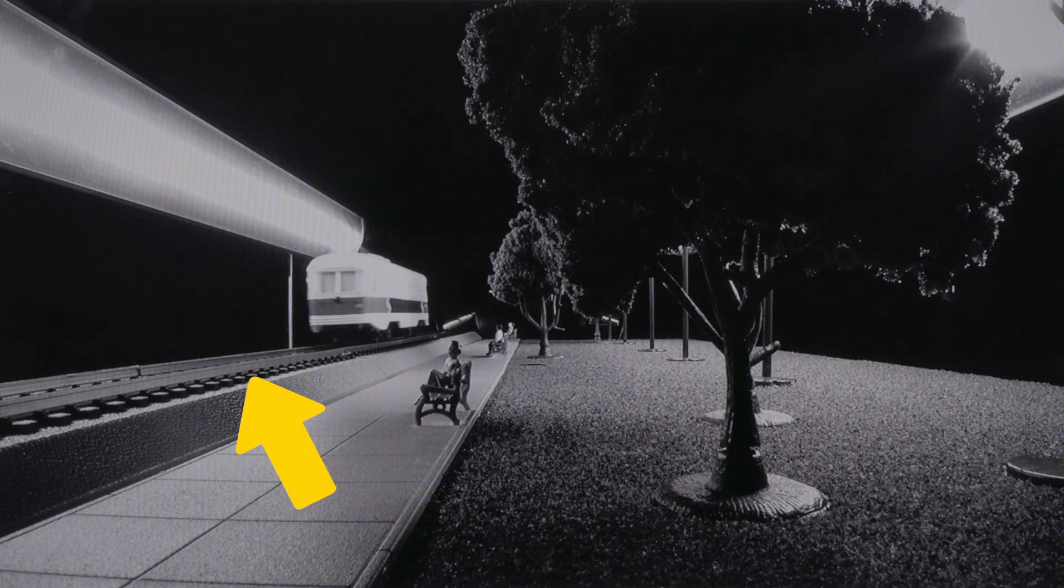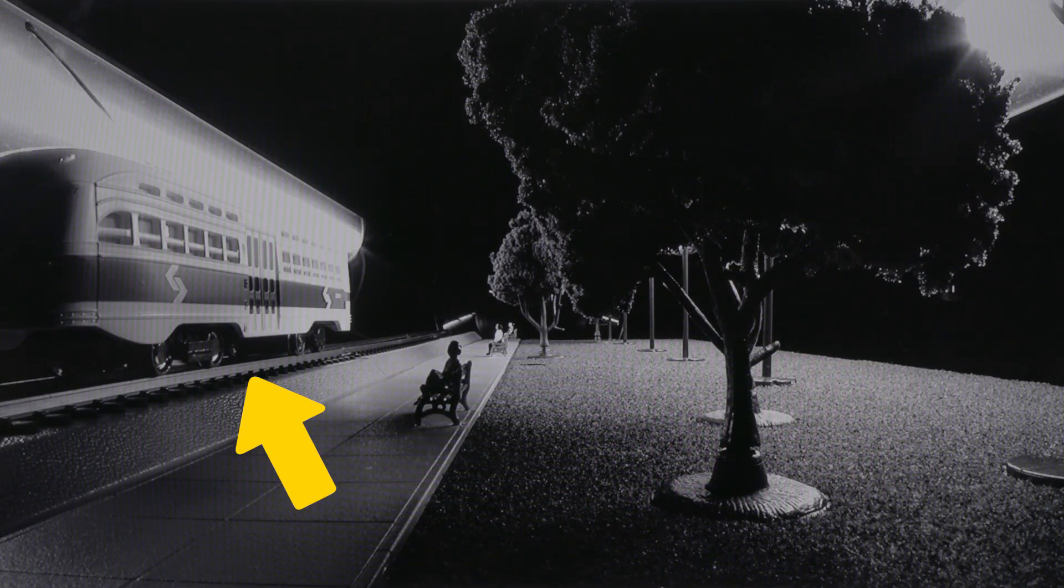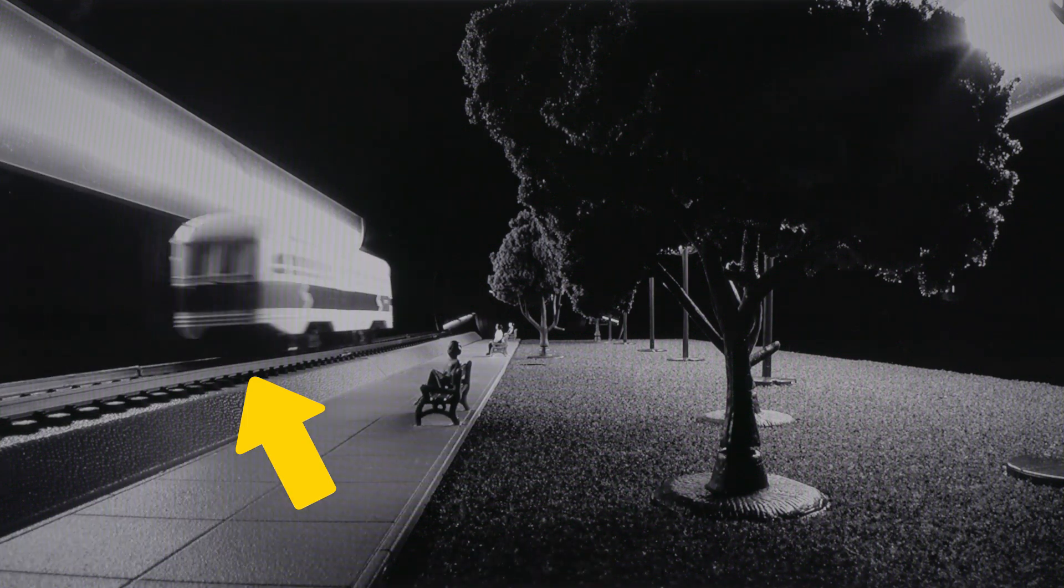Viewed through the fixed focal length lens, you can see the side of the train and you can clearly tell which direction it is moving, whether forward or backward.